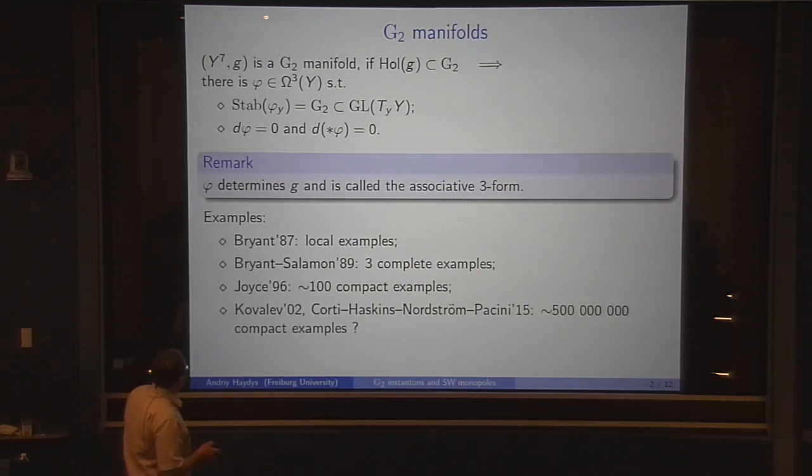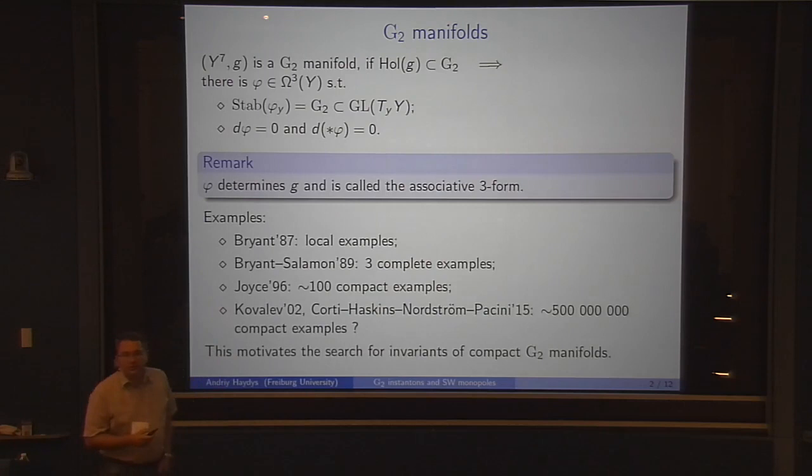By twisted connected sum construction, due to Corti, Haskins, Nordström, and Pacini, we have potentially a huge number of compact examples, something like 500 million. But I also put a question mark here, because there are no efficient invariants which could distinguish all those potentially different G2 manifolds.